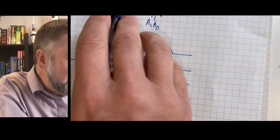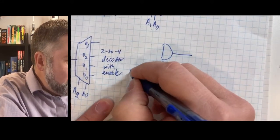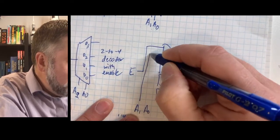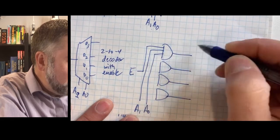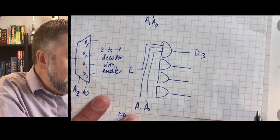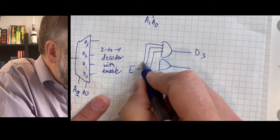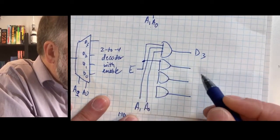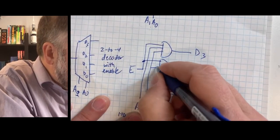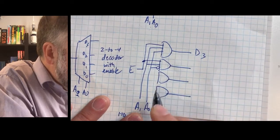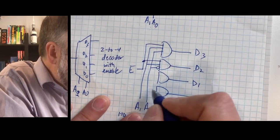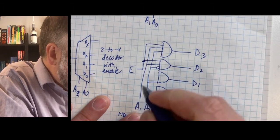The top output D3 is when A1 and A0 are both true, so it's enable·A1·A0. Then D2 is enable·A1·A0-prime, so A0 gets inverted. D1 has A0 on its positive version and A1 inverted, plus the enable.